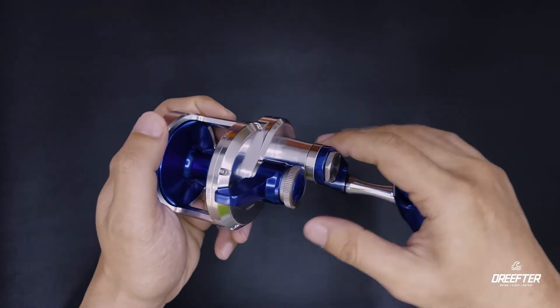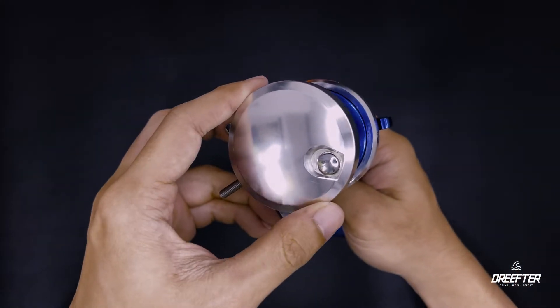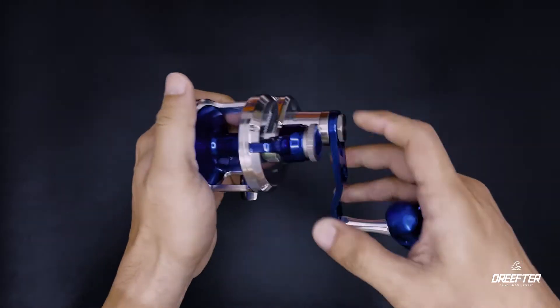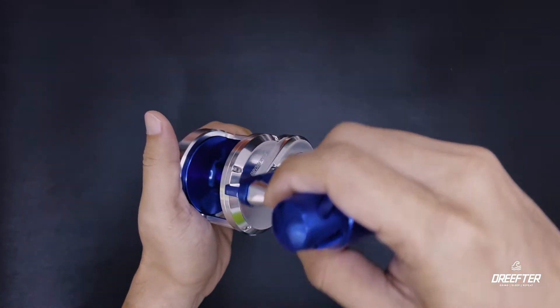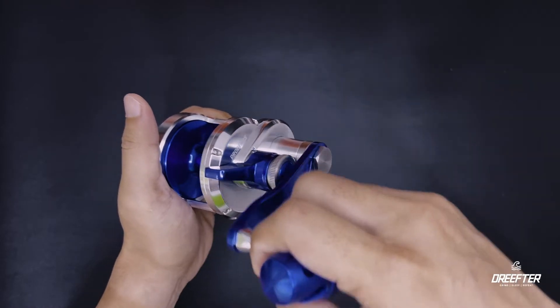Sa gilid naman makikita mo yung switch para sa clicker. So napaka useful ng clicker especially pag nag trolling ka, kasi it would alert you pag may strike na isda.